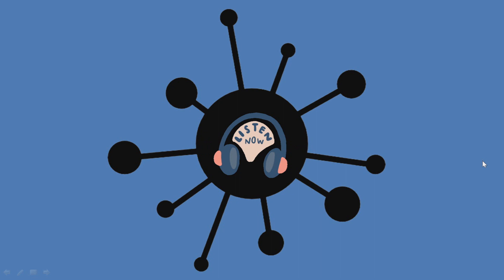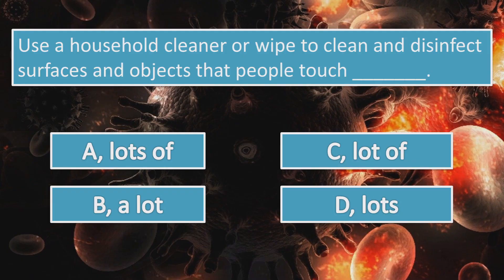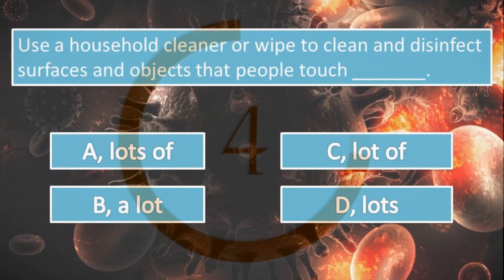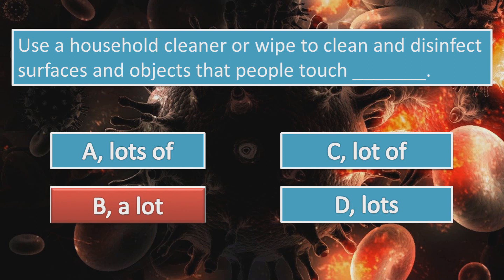Try not to touch your eyes, nose or mouth. Use a household cleaner or wipe to clean and disinfect surfaces and objects that people touch a lot. Follow recommendations from your local health authority, especially if there are people with coronavirus in your area.